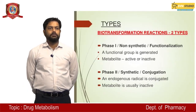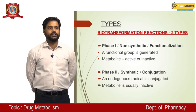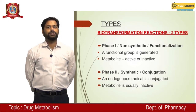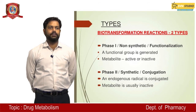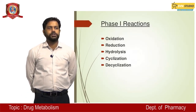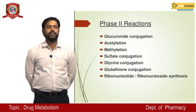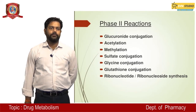Biotransformation reactions are of two types: Phase 1 and Phase 2. Phase 1 is also known as non-synthetic reaction or functionalization reaction. Phase 2 is known as synthetic reaction, also called conjugation reaction. In Phase 1, a functional group is generated and the metabolite is active or inactive. In Phase 2, an endogenous radical is conjugated and the metabolite is usually inactive. Phase 1 includes oxidation, reduction, hydrolysis, cyclization, and decyclization. Phase 2 includes glucuronide conjugation, acetylation, methylation, sulfate conjugation, and glycine conjugation.